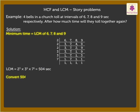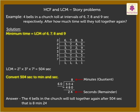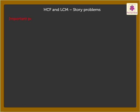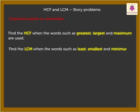But let us convert these seconds to minutes and seconds. Thus, by solving we get the answer as 8 minutes 24 seconds. So, the four bells in the church will toll together again after 8 minutes 24 seconds. Remember: we find the HCF when words such as greatest, largest and maximum are used; we find the LCM when words such as least, smallest and minimum are used.